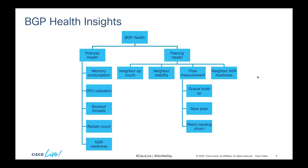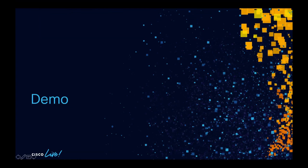As part of the SD BGP app, BGP Health Insights monitors the health of BGP. BGP health includes BGP Process Health and BGP Peering Health. BGP Process Health is constituted of BGP's memory consumption, CPU utilization, blocked threads, BGP Restart Count on Active and Standby, and NSR Health. As part of flow measurement, queue buildup will be monitored, slow peers can be detected, and peers causing churn in the network can be detected as well. With this, let's move on to the demo.